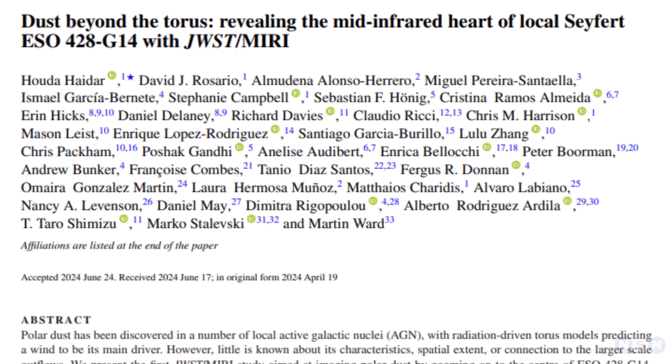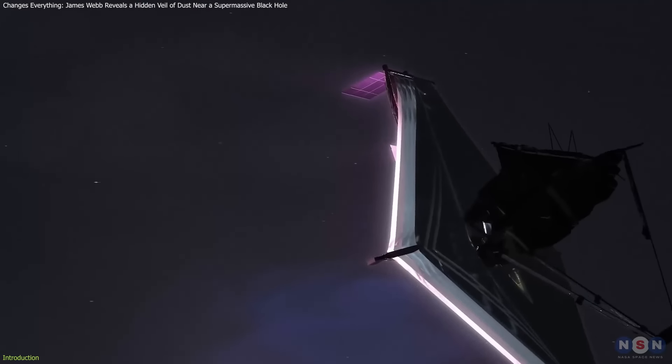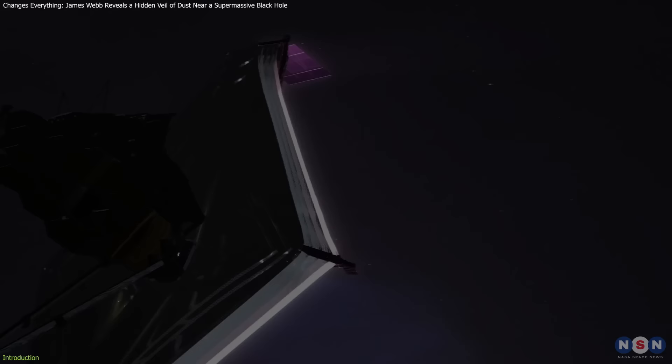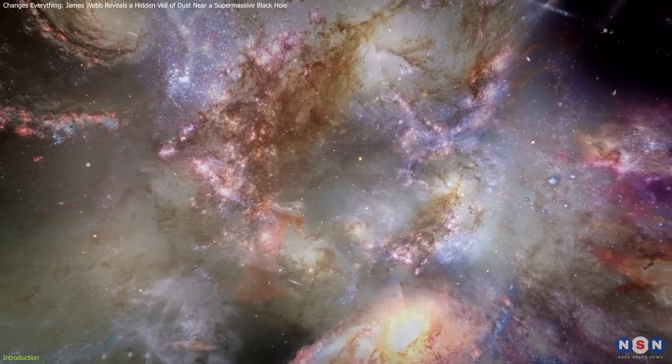A team of international scientists, led by researchers at Newcastle University, has used the James Webb Space Telescope to unveil a hidden veil of dust in a galaxy 70 million light-years away.